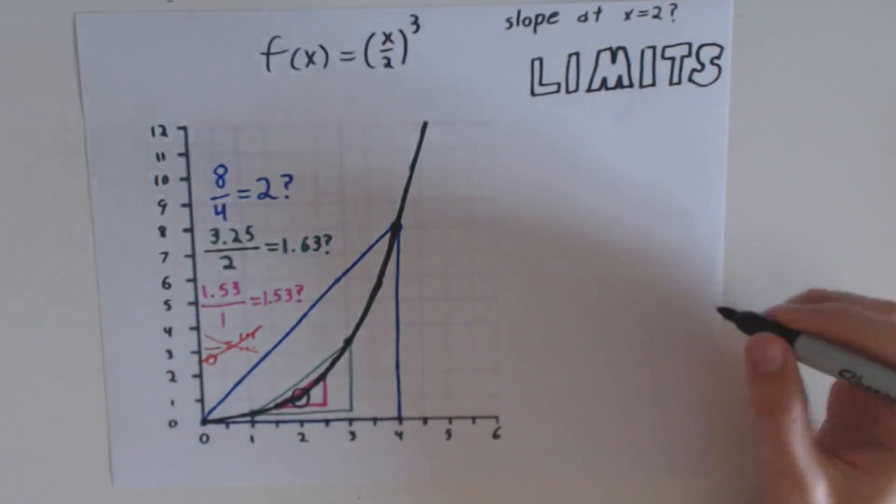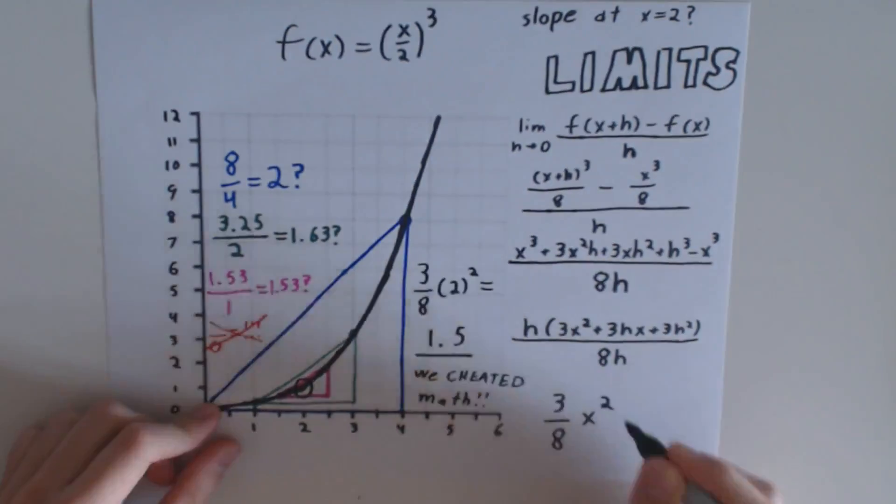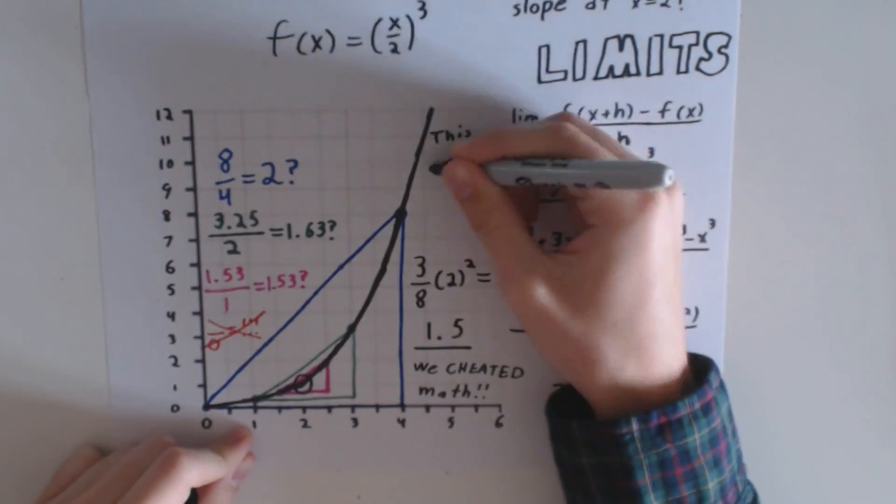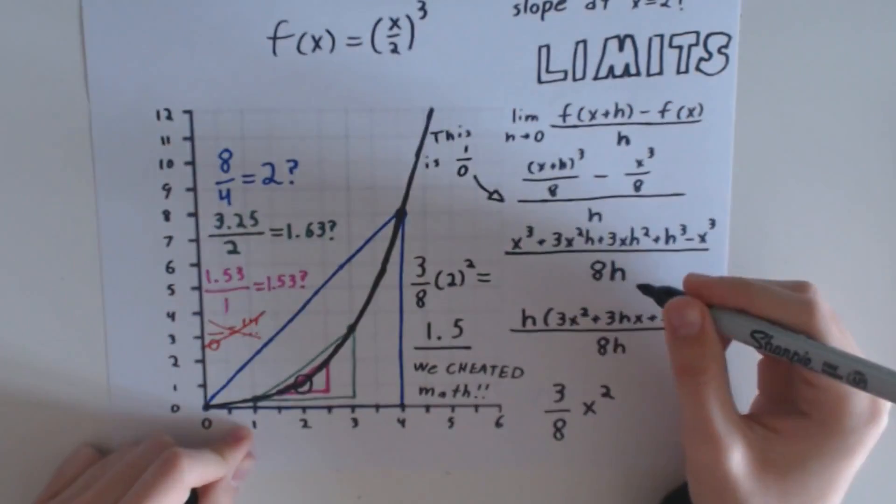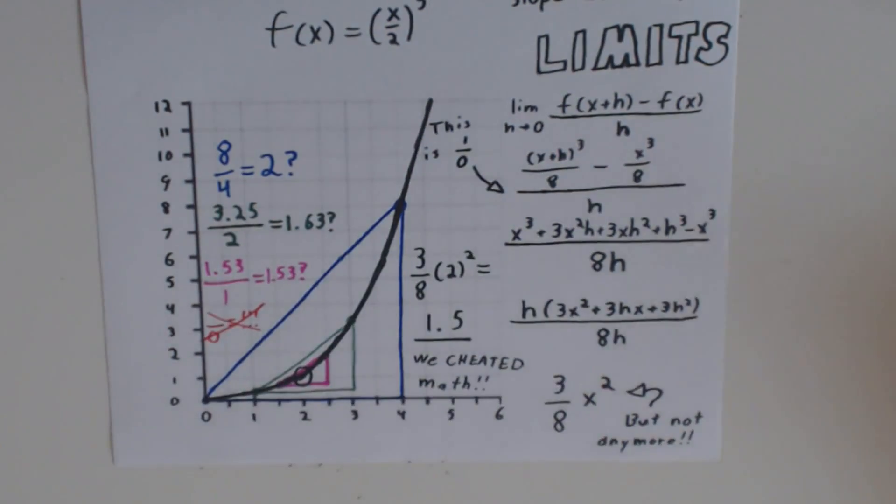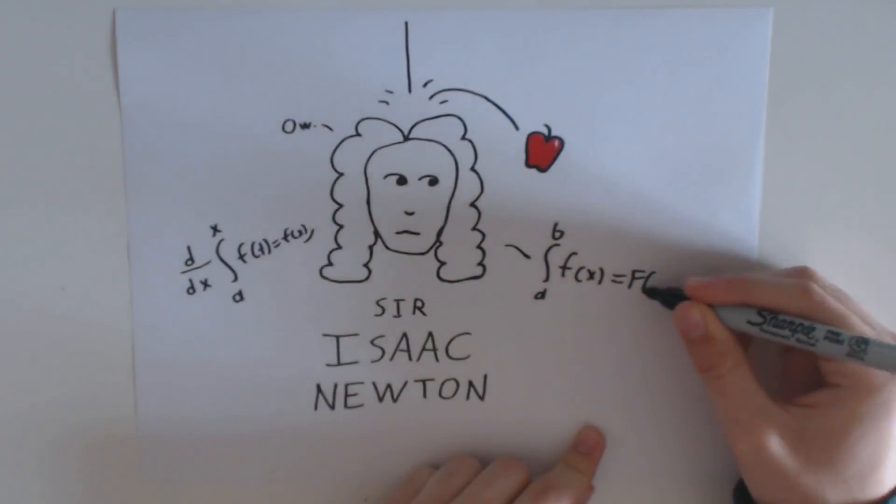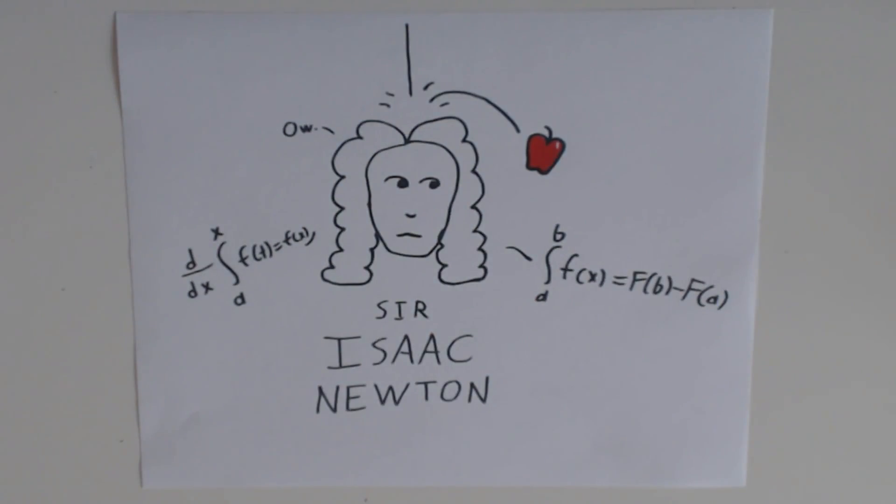Differential calculus gives us the tools to solve this problem using something called limits. With limits, we can use some fancy math to dodge around the division by zero and find an answer without breaking the rules of algebra. The math at work here is a little too technical for this video, but basically we can cancel out the zero using another zero in the numerator. The remaining fraction is our answer. This revolutionary technique was invented by Isaac Newton, the physicist and mathematician who also discovered gravity.